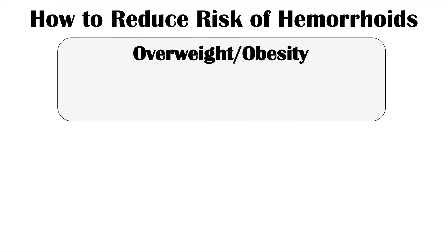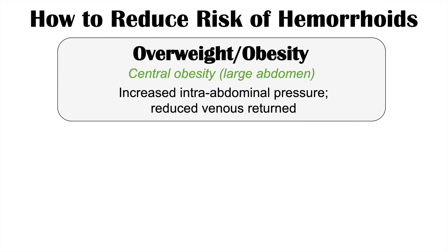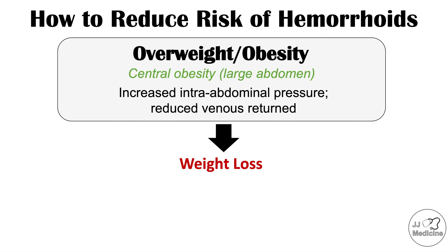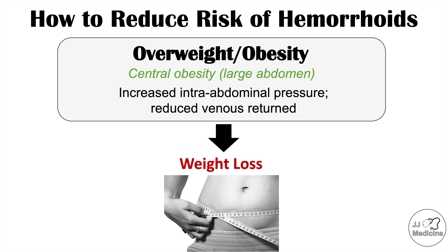Another risk factor is overweight or obesity, more specifically central obesity or having a large abdomen. A large abdomen increases intra-abdominal pressure, which reduces venous return and creates more pressure in the venous system. This means blood in those vascular cushions cannot drain properly, enlarging the hemorrhoids. Losing weight, especially losing belly fat, is important in reducing the symptoms and risk of hemorrhoids.